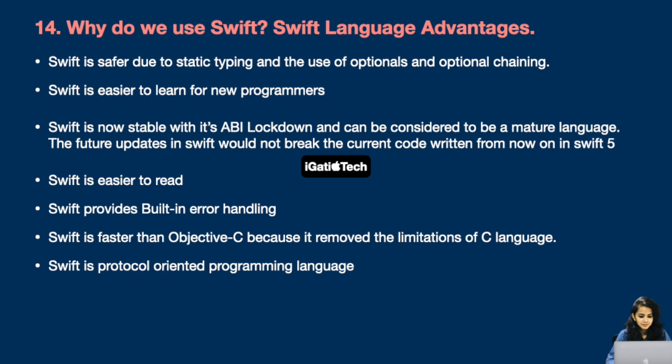Next question: why do we use Swift, or what are the advantages of Swift? Swift is safer due to static typing and the use of optionals and optional chaining. Swift is easier to learn for new programmers. Swift is now stable with its ABI lockdown — the biggest update Apple has ever launched — and can be considered a mature language. Future updates to Swift will not break current code from Swift 5 onward. Swift is easier to read, provides built-in error handling, is faster than Objective-C because it removed the limitations of C, and is a protocol-oriented programming language.